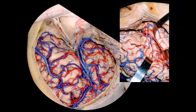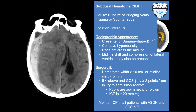In blue we can see many of the superficial cortical bridging veins, which are clinically important as they are the main cause of subdural hematomas. Here on the left we have an axial non-contrast CT showing a large hyperdense crescent-shaped hematoma extending across all the suture lines, which is very consistent with an acute subdural hematoma. We can also see right-to-left midline shift.